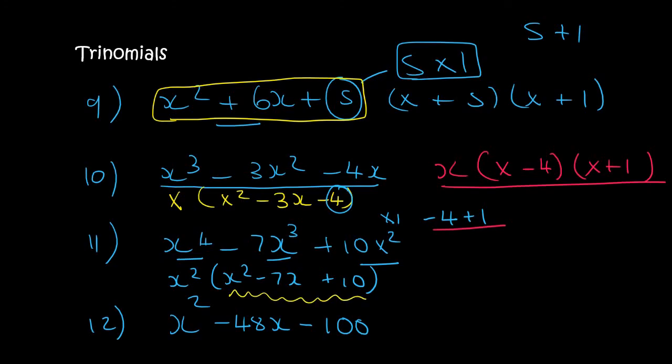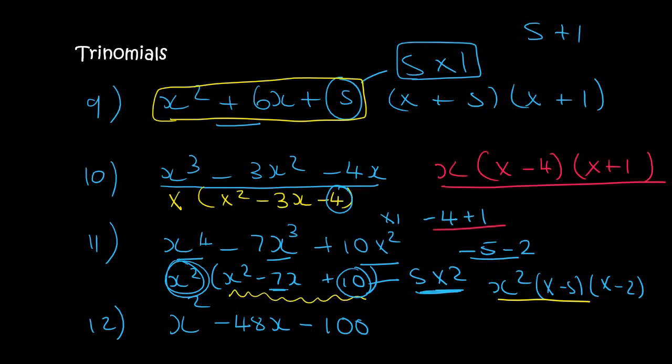We treat it like a trinomial. 10 is the same as 5 times 2—yes it can also be written as 10 times 1, but I can straight away see that 5 and 2 will make minus 7 by saying minus 5 minus 2. So we then keep the x squared that we already found, we open up two brackets, you're going to get x and x, and then we said minus 5 minus 2. Your final answer is that with the x squared in front.